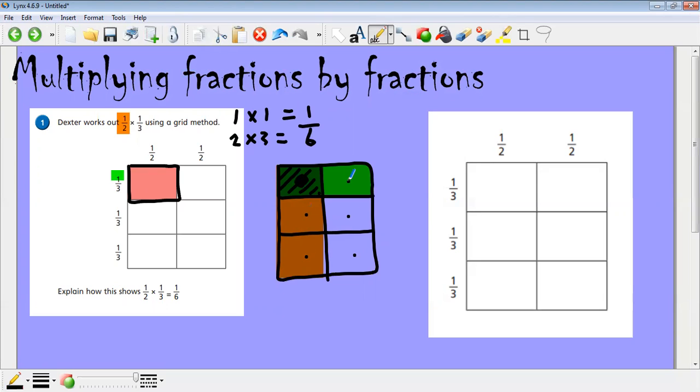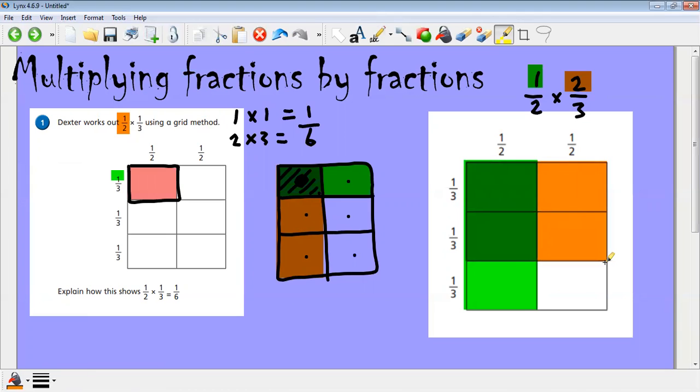So over here, this question was exactly the same as one I was showing you on the other side of the board. So again, I'm just going to show you one last time. A half, shade half the diagram. Two thirds, like so. This is the part that's overlapped. I've got two out of six, which is the same as a third.